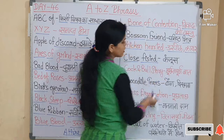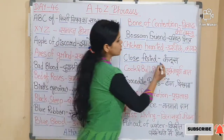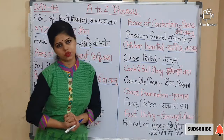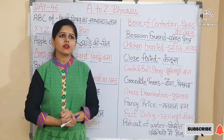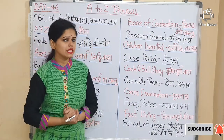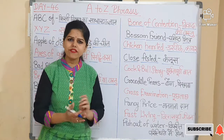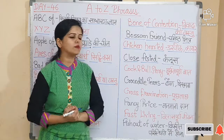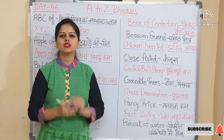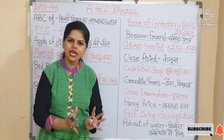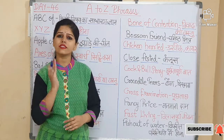Now next is 'Close fisted'. Close fisted means kanjoos — a miser or someone very tight with money. The sentence is: To save money and maintain a balance, you should be close fisted.